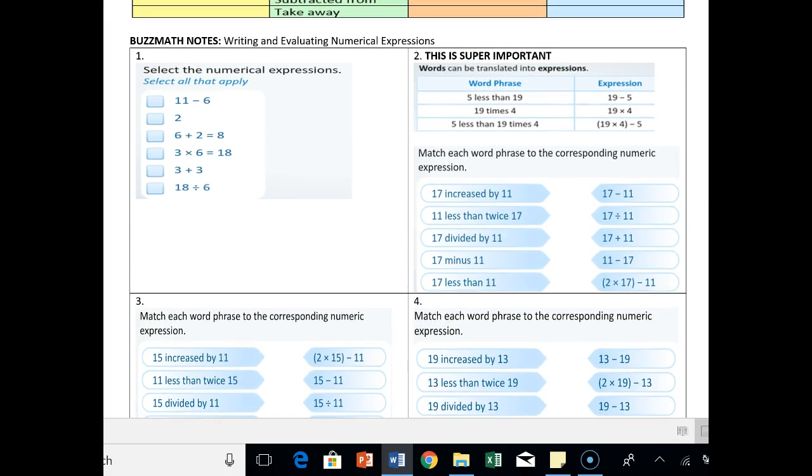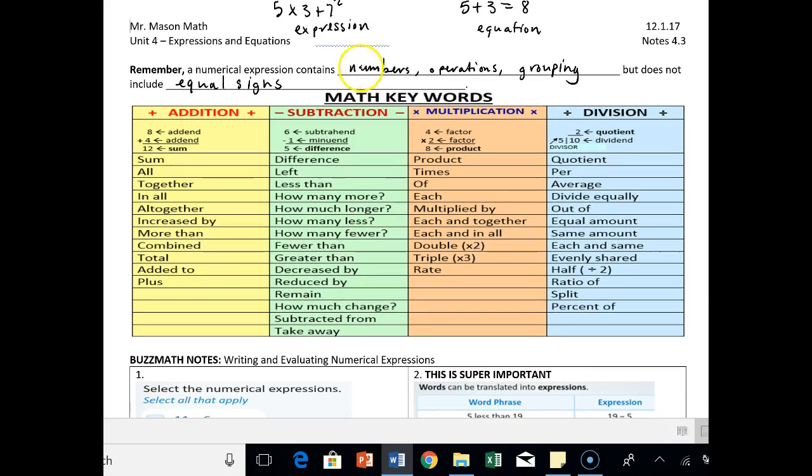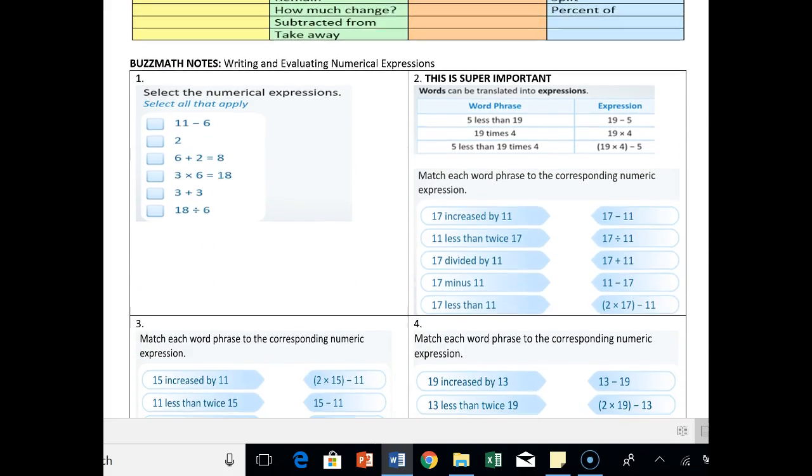It says buzz math note. We don't use buzz math anymore, but we can still use these notes from that program and say, let's go ahead and pick out all the ones that are numerical expressions. Remember, go back to the definition. That's anything that contains numbers, operations, grouping symbols, but does not contain equal signs.